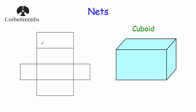Let's have a look at a cuboid. The net of a cuboid would look something like this. Depending on the cuboid it may consist of six rectangles, or it might include squares on the right and left hand faces. This would fold to be the six faces of a cuboid — the face at the bottom, the face at the front, the face on the back, the face on the right, the face on the left, and finally this rectangle would fold over to be the top face of the cuboid.